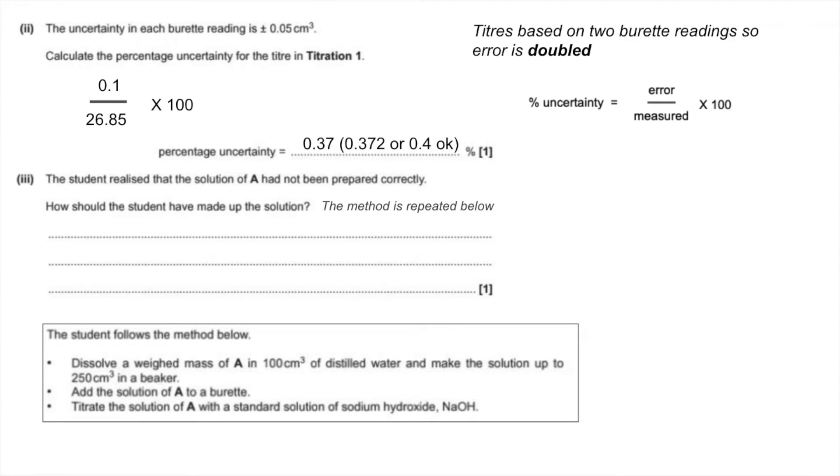The final part of C: the student realized that the solution of A hadn't been prepared correctly. How should they have made up the solution? If we scan through the information in the box, the method, you can see that the mistake is that they've used a beaker to make up the 250 cm³ of solution. What they should have done is used a volumetric flask. The student should have used a 250 cm³ volumetric flask instead of a beaker.